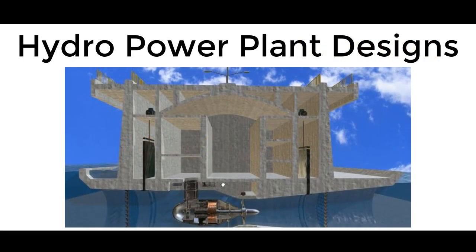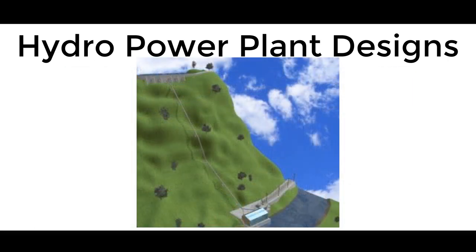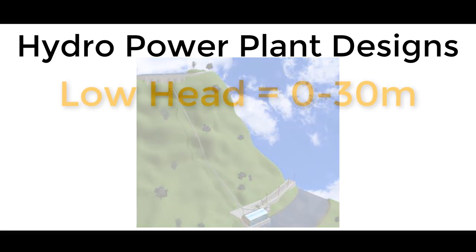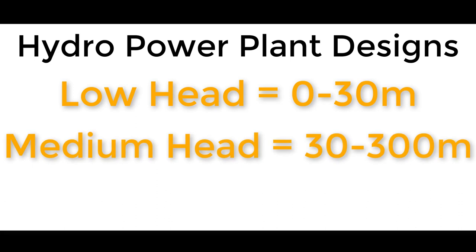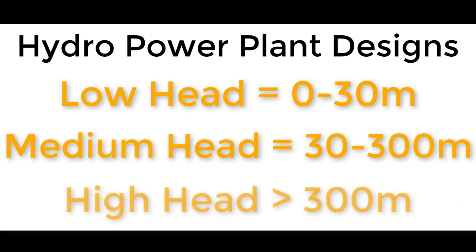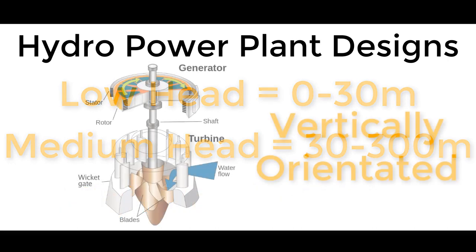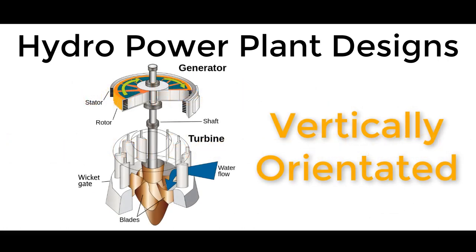Hydroelectric turbines are also classified by head. Low head would be up to 30 meters, medium head would be 30 to approximately 300 meters, and high head would be anything above approximately 300 meters. You can also classify turbines by their orientation — whether they're vertical or horizontal — and by the shape of the water passage through the turbine.